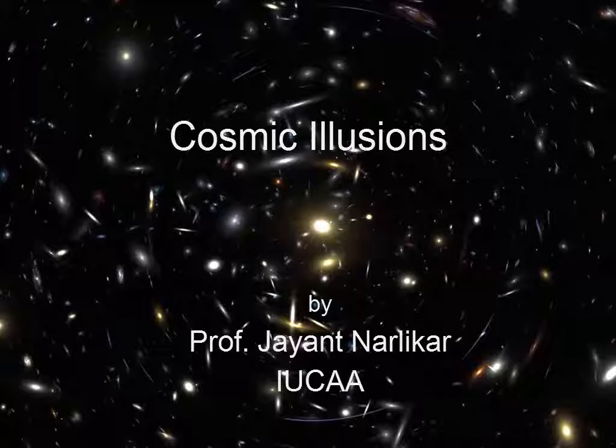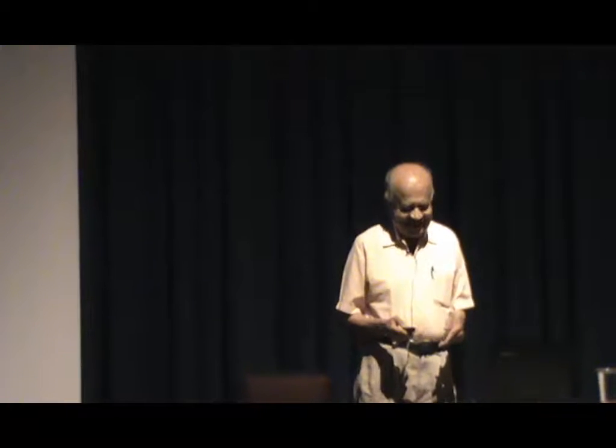Today I am talking about Cosmic Illusion. Let us see what I mean by this. Illusion means you get something in front of you, you look at it and you think you are looking at something which you have in your own mind and it is there. But in reality, it may be something else. So what is not there is what you see. Let us see some of the examples.